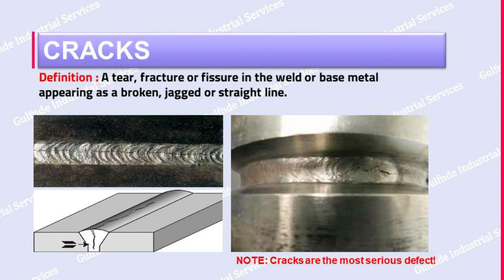You can also join us on Telegram and WhatsApp group for material discussion and job updates. The definition of crack is: a tear, fracture, or fissure in the weld or base metal, appearing as a broken, jagged, or straight line.